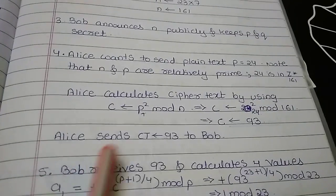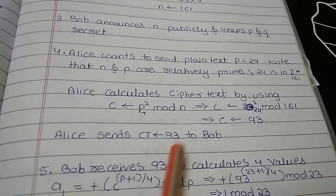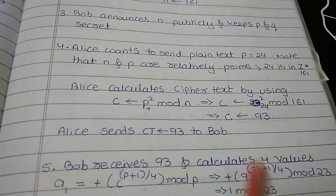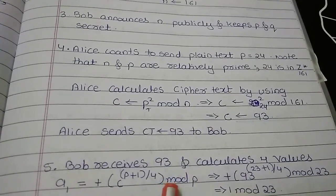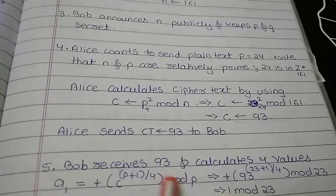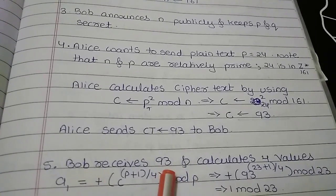So now the Alice who is sender is going to send the cipher text 93 to the receiver called Bob. Now Bob is the receiver who is going to receive the cipher text 93 and he is going to decrypt this 93 to obtain the plain text.